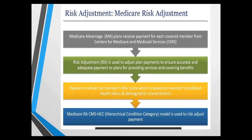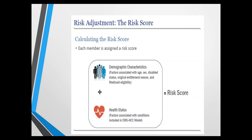A brief overview of how Medicare risk adjustments work and why it's so important, especially for Medicare Advantage, which receives payments from CMS based on risk adjustment to ensure they're getting payments for the illness burden of the patients they care for. It's driven by the patient's risk score, health status, and demographics — all fed into the Hierarchical Condition Category HCC model that produces a risk-adjusted score. Every patient has a risk score based on their age, sex, whether they're dual eligible such as Medicaid/Medicare, or disabled, plus another component determined by health status — heart failure, diabetes, etc.